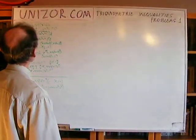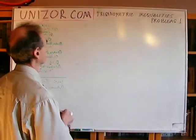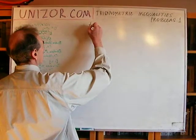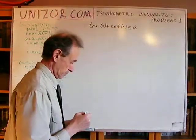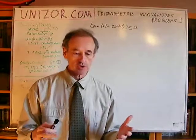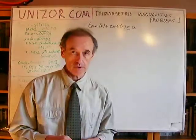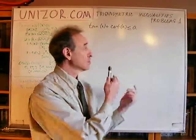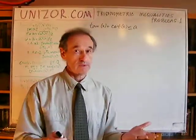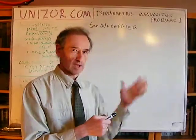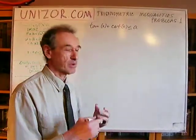I have three problems. They're not really difficult, but there are certain calculations which I hope I will not get lost in. Problem number one: tangent of x plus cotangent of x less than or equal to a. The first complication is that it's not just a simple tangent less than something — it's a sum of two different trigonometric functions. To better understand what this is about, I prefer to draw a graph.